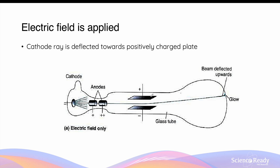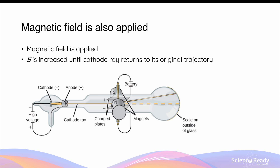In the second part of the experiment, Thomson applied an electric field such that the positive plate is at the top and the negative plate is at the bottom. In the presence of the electric field, the cathode ray's trajectory is deflected towards the positively charged plate. Therefore, by the time it reaches the end of the cathode ray tube, the position of the fluorescence will shift upwards compared to where it was before when the electric field was not applied. When the magnetic field is also switched on and applied such that the resultant force due to the magnetic field acting on the cathode ray is opposite to that of the force due to the electric field, the deflection of the cathode ray can be reversed.